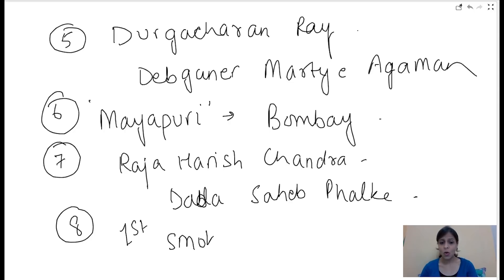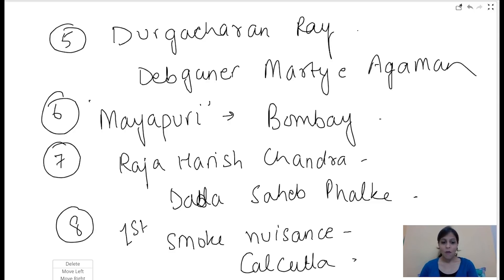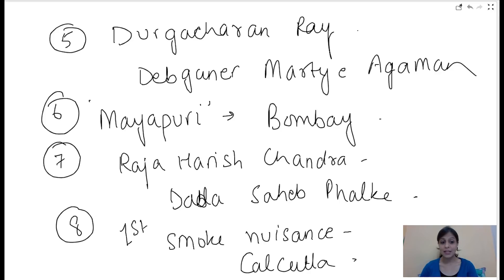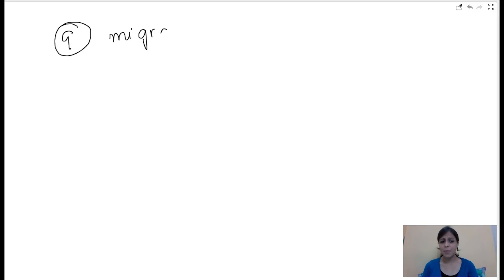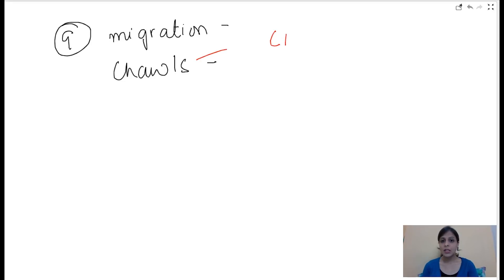Which was the first Indian city to get a Smoke Nuisance Act passed? That is Kolkata. Now, what do you understand by migration? Migration is the movement of people from one region to another. And what do you understand by chawls? This question was asked in the CBSE 2013 exam.